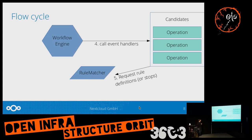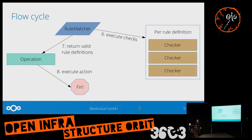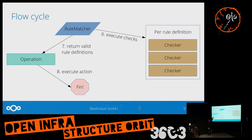The event handlers are called and get access to the rule matcher. From there, they request the rules — the complete sets configured in the UI. The rule matcher performs execution checks: which is the correct tag set, is the request time correct, or does the user actually have access to the object that fired the event? It filters the possible operations and returns them. Whatever is left can be executed, like writing into the conversation room.